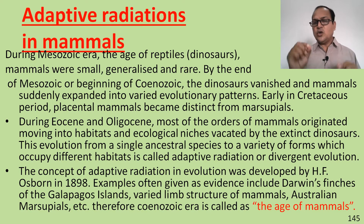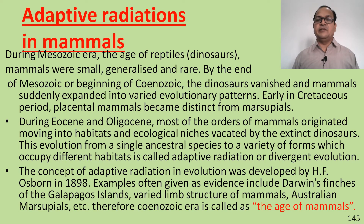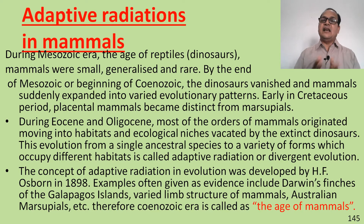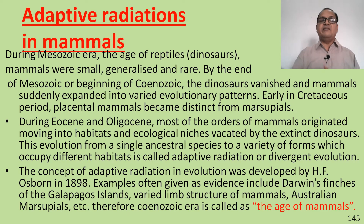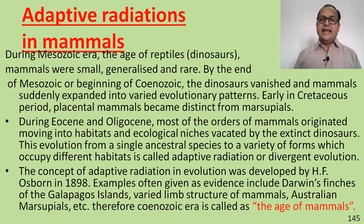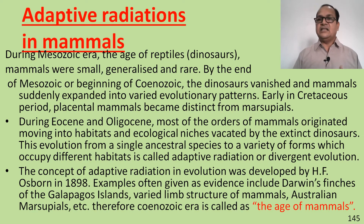The concept of adaptive radiation in evolution was developed by H.F. Osborn in 1898. Examples given as evidence include Darwin's finches on the Galapagos Islands, the varied limb structure of mammals, and the Australian marsupials.